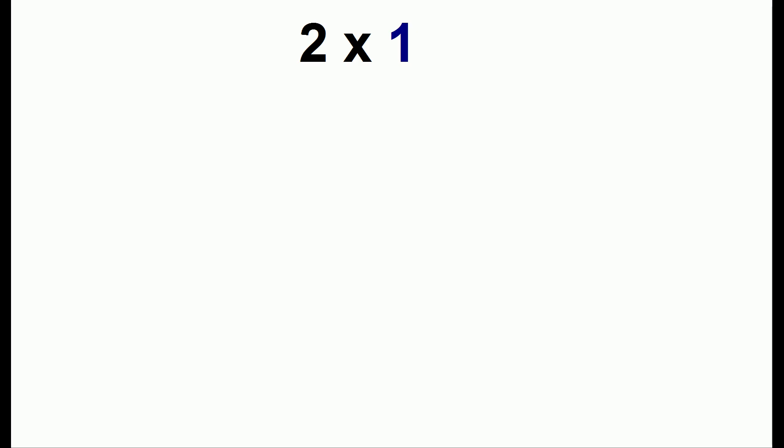We'll start out with some simple examples. Let's say you wanted to do 2 times 1, so we'll draw 2 lines, and in the other direction we have 1 line. We count the dots, and we get 2 dots, and 2 times 1 is 2.